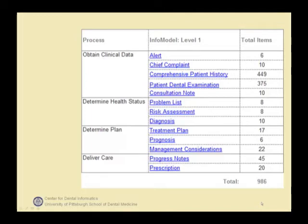Here you see the top-level categories of the model. We made the model compatible with the ANSI ADA specification 1000, standard clinical architecture for the structure and content of an electronic health record. This is where the leftmost four categories come from. Within our information model you see a number of categories such as comprehensive patient history, problem list, and diagnosis.